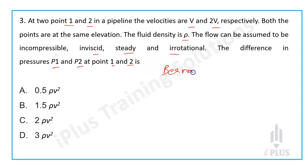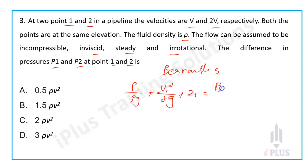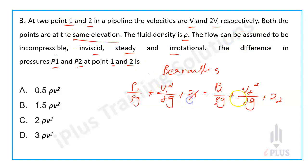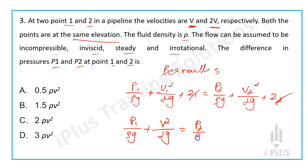Apply Bernoulli's equation between points 1 and 2. P1 by rho g plus V1 squared by 2g equals P2 by rho g plus V2 squared by 2g. Here V1 is V and V2 is 2V, so V2 squared is 2V whole squared which equals 4V squared.